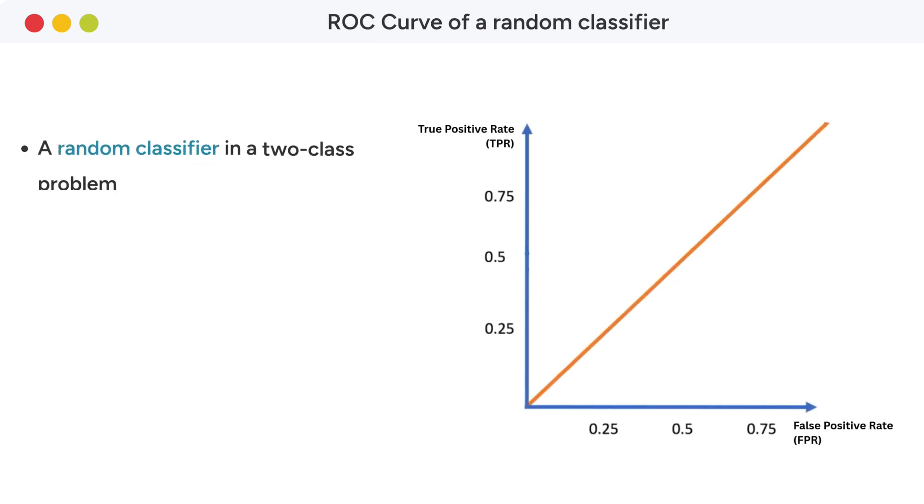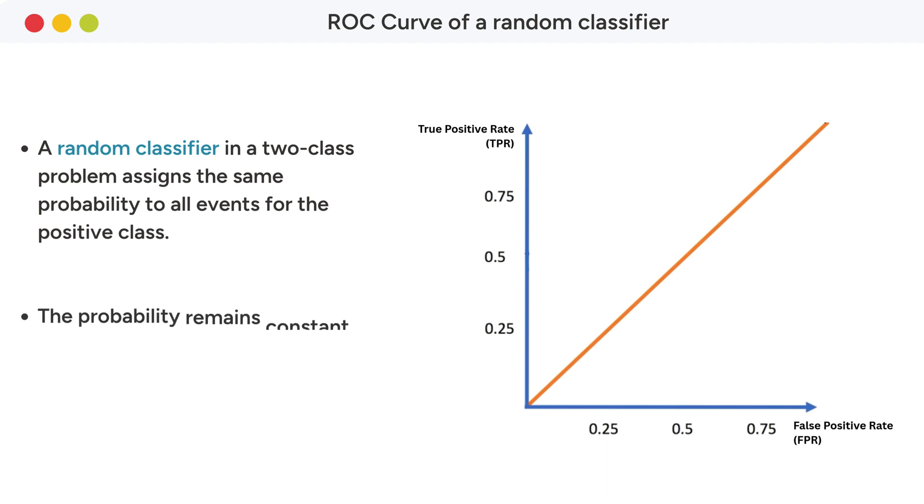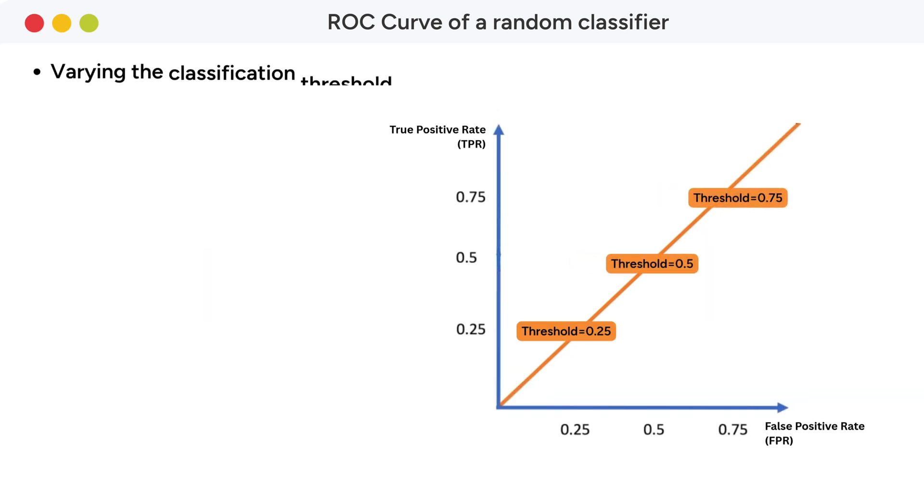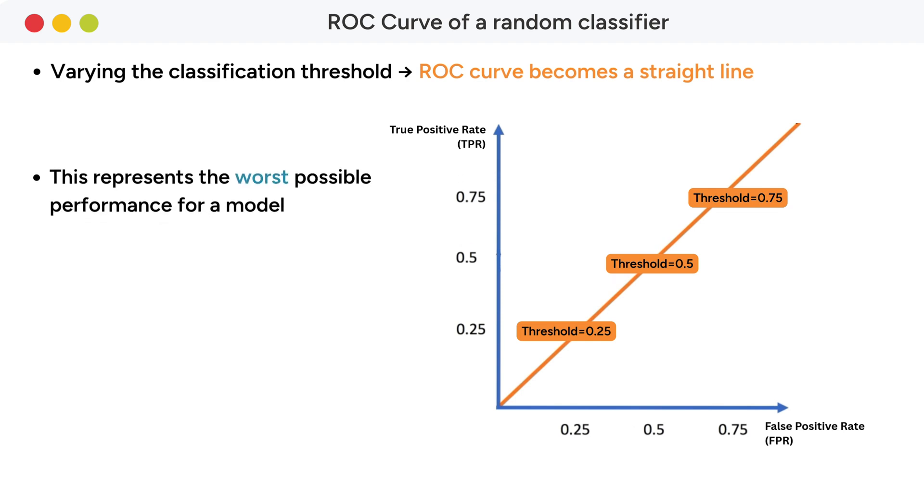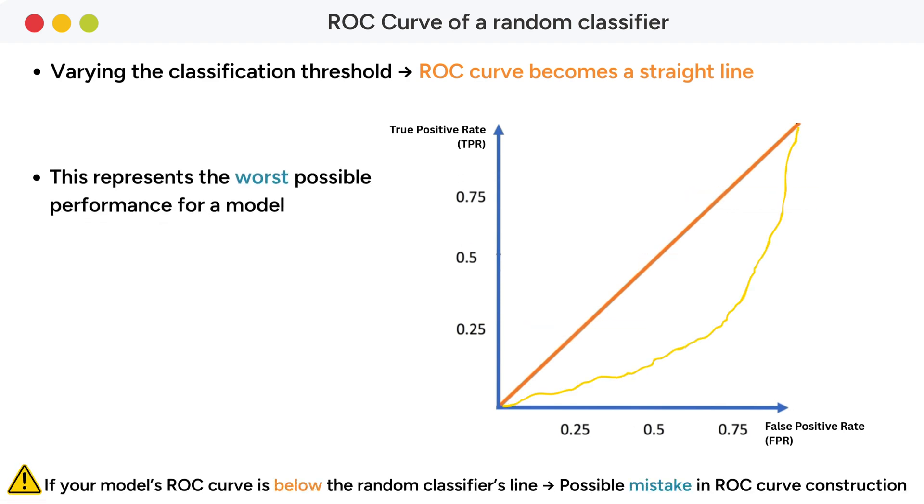For a random classifier in a two-class problem, all events have the same probability for the positive class, independently of their actual class values. By varying the classification threshold, the ROC curve becomes a straight line. This is the worst performance your model can produce. If the ROC curve of your model lies below the line of the random classifier, then you probably made a mistake in building the ROC curve.